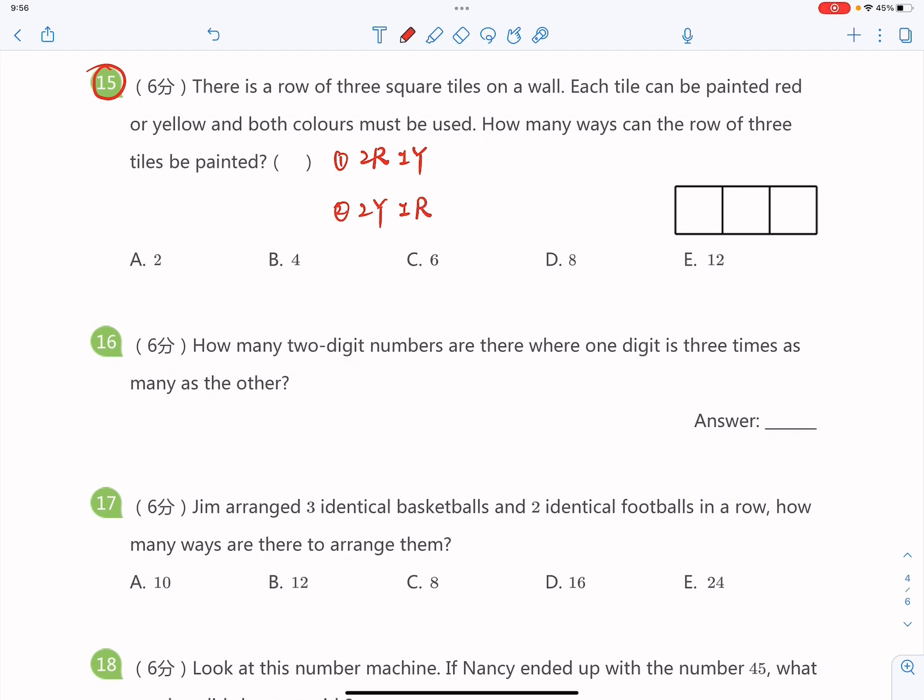And after you choose the colors, you can arrange them. If you have two red and one yellow, that could be red, yellow, red, or yellow, red, red, or red, red, yellow.